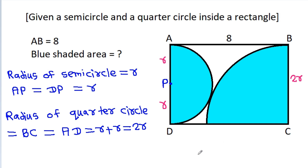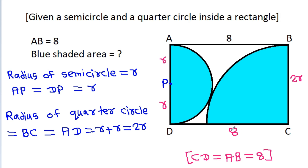Also, CD will be equal to AB, and AB is 8, so CD will be 8. And ABCD is a rectangle, which means this angle will be 90 degrees.